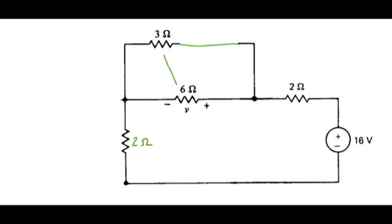So look for simplifications. 3 is in parallel with 6 leading to a 2 ohm resistor. Let's go ahead and swap that out. I also need to note that this is V16.